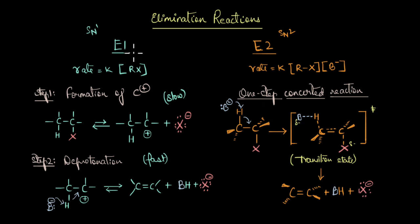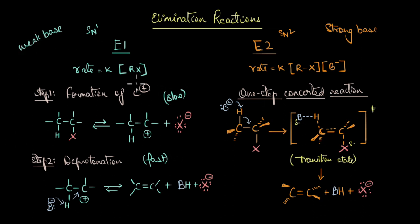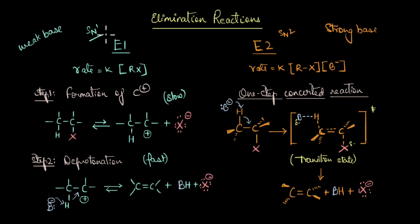Depending on the reaction conditions and reagents, the elimination can be E1 or E2. In the presence of a strong base, the haloalkane is likely to undergo an E2 elimination reaction, whereas in the presence of a weak base, the reaction would follow an E1 mechanism. An E1 elimination reaction will always compete with an SN1 substitution reaction, because in both cases the first step is the formation of a carbocation. A nucleophile can attack this carbocation to give a substitution product, or a weak base can deprotonate to give an alkene.